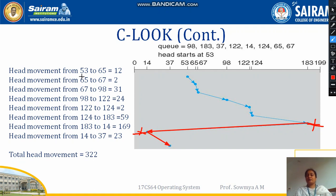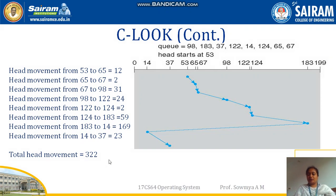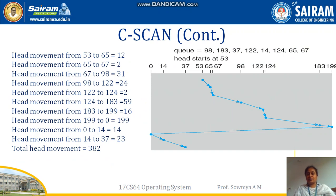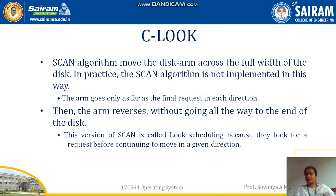So the head moves from 53 to 65, 65 to 67, continuing in one direction until 183. After 183, instead of going to 199, it reverses direction and goes directly to 14, the least value in the reverse direction. From 14, it allocates in the forward direction to 37. The total head movements with C-LOOK is 322, compared to C-SCAN's total of 382. The unnecessary movements of 16 (183 to 199) and 199 (199 to 0) are eliminated in C-LOOK.